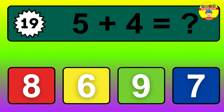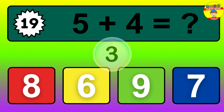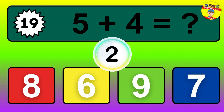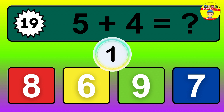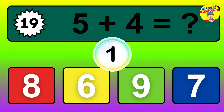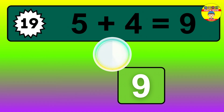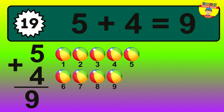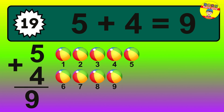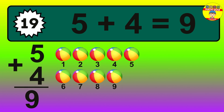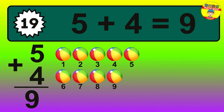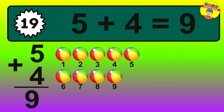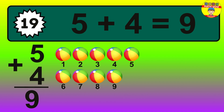Question 19. 5 plus 4 equals what? So the answer is 5 plus 4 is 9. Let's count it. 1, 2, 3, 4, 5, 6, 7, 8, 9.